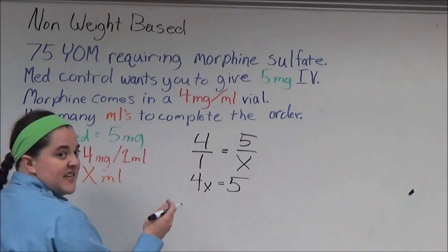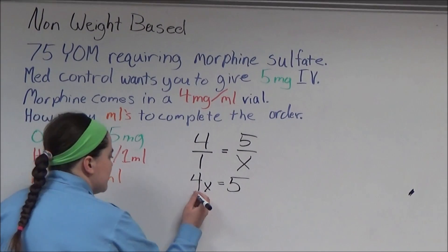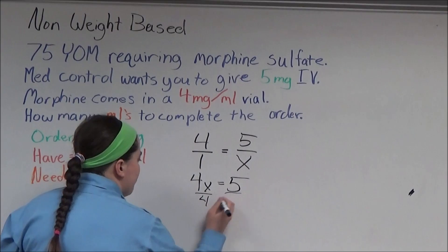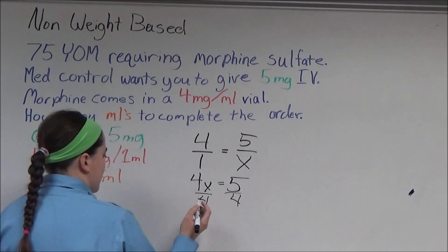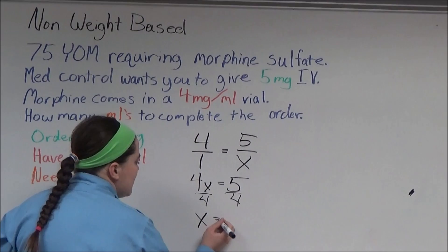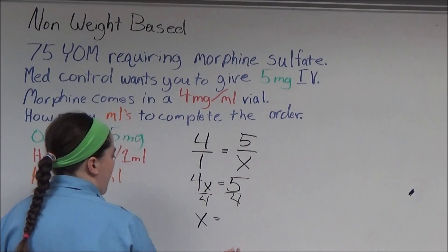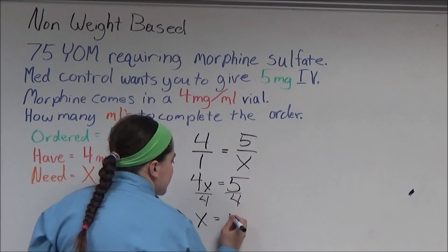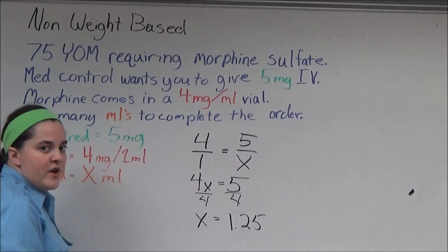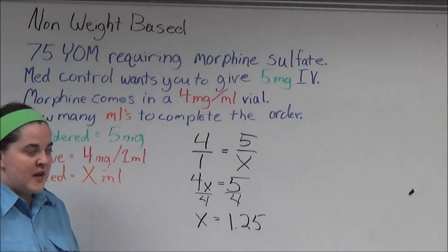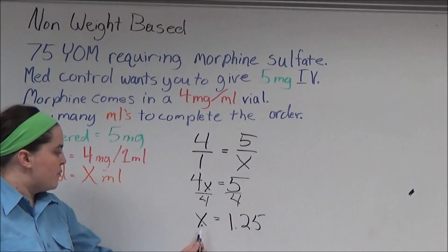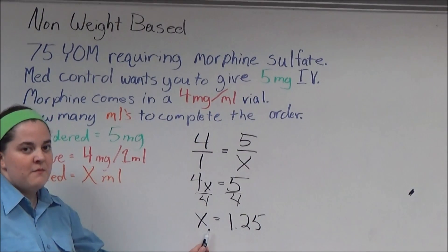Now you need to get x by itself, so you divide both sides of the equation by 4. X is equal to 5 divided by 4, which is 1.25. So in order to give this patient 5 milligrams of medication, I have to give 1.25 milliliters.